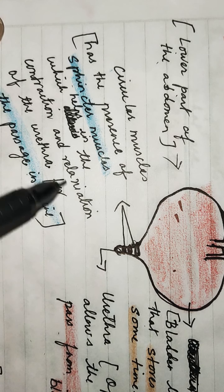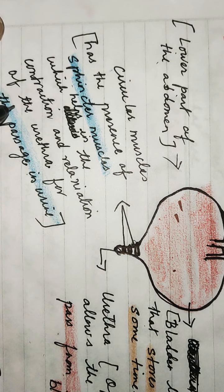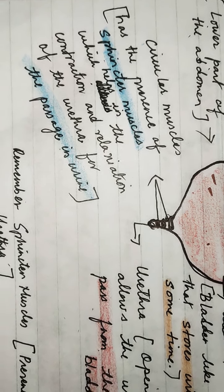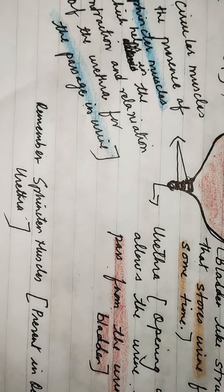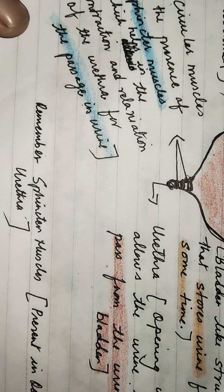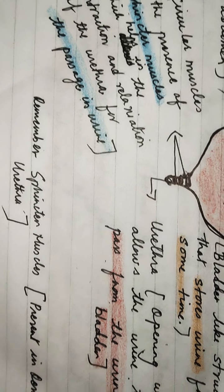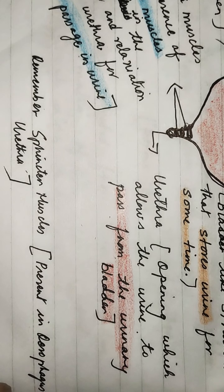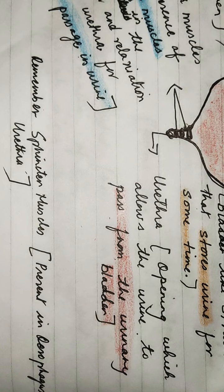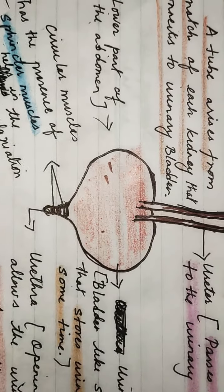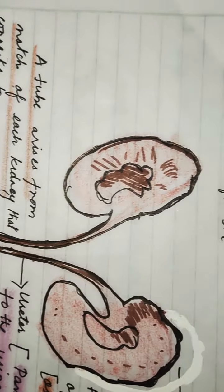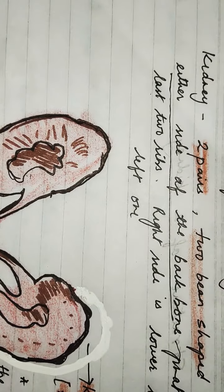The sphincter muscles help in the contraction and relaxation of the urethra for the passage of urine. Remember, sphincter muscles are also present in the esophagus and small intestine, as well as in the urethra.